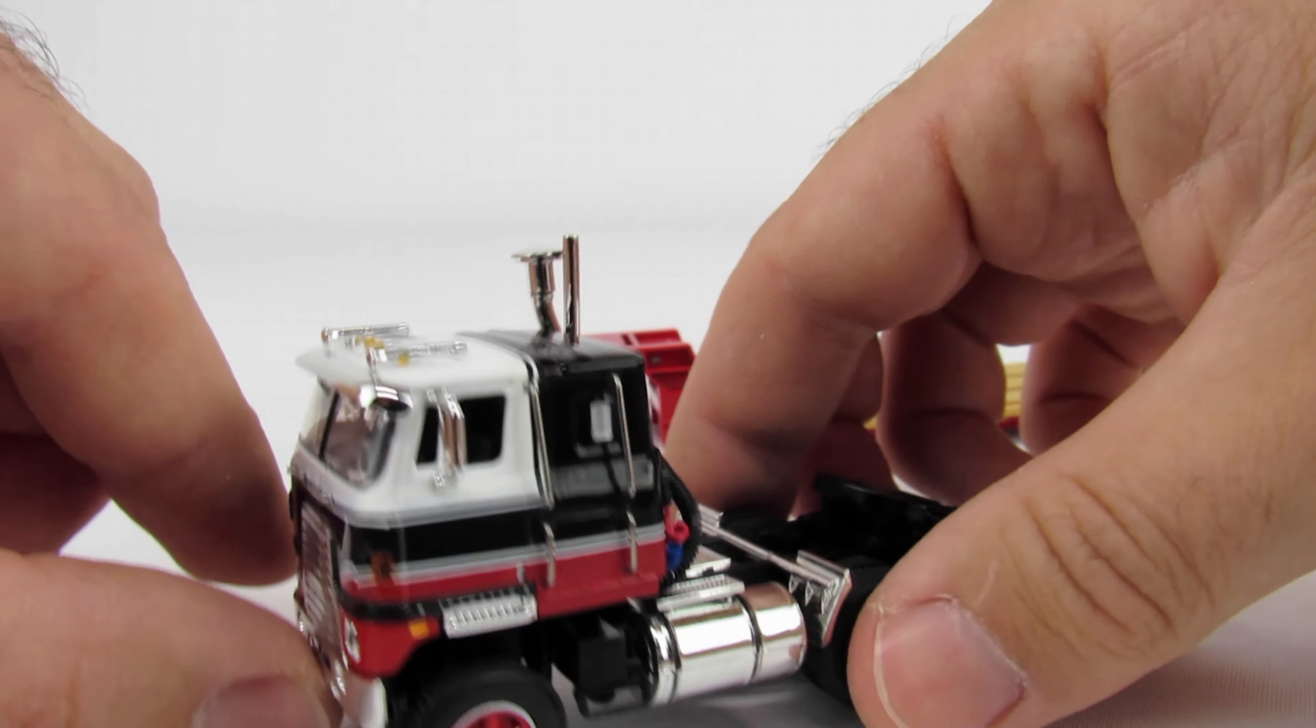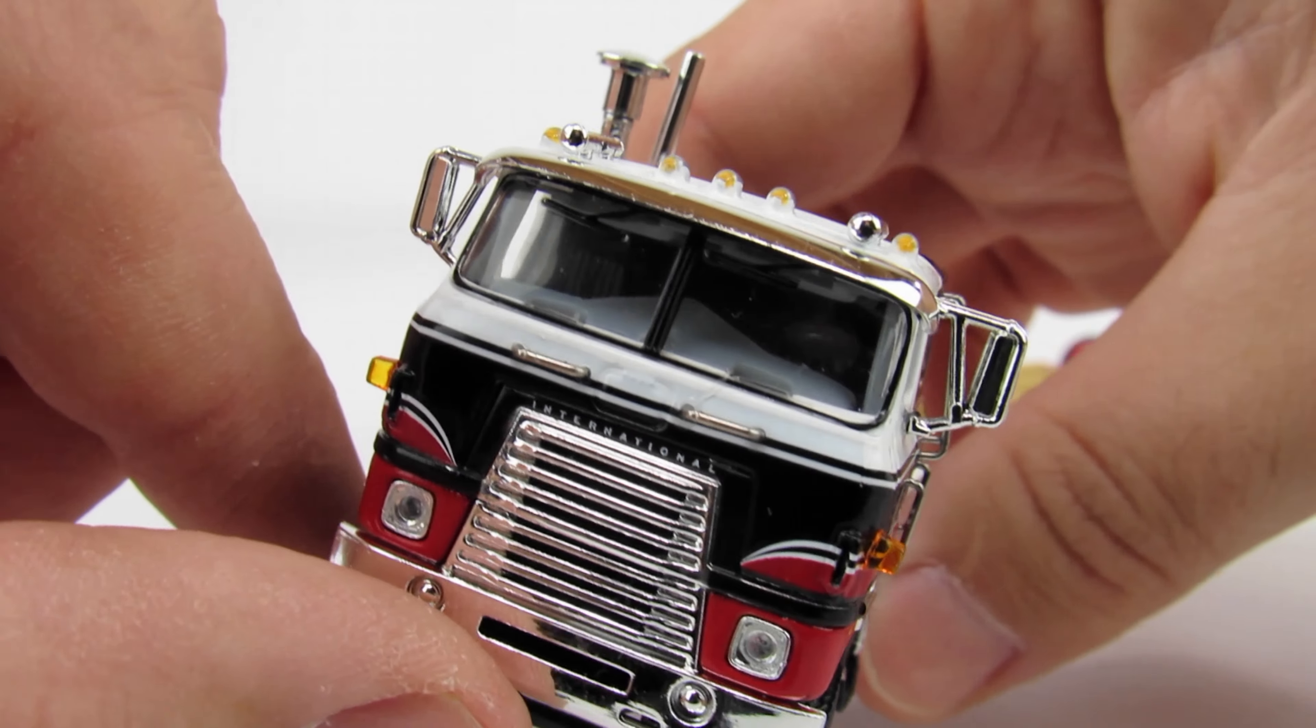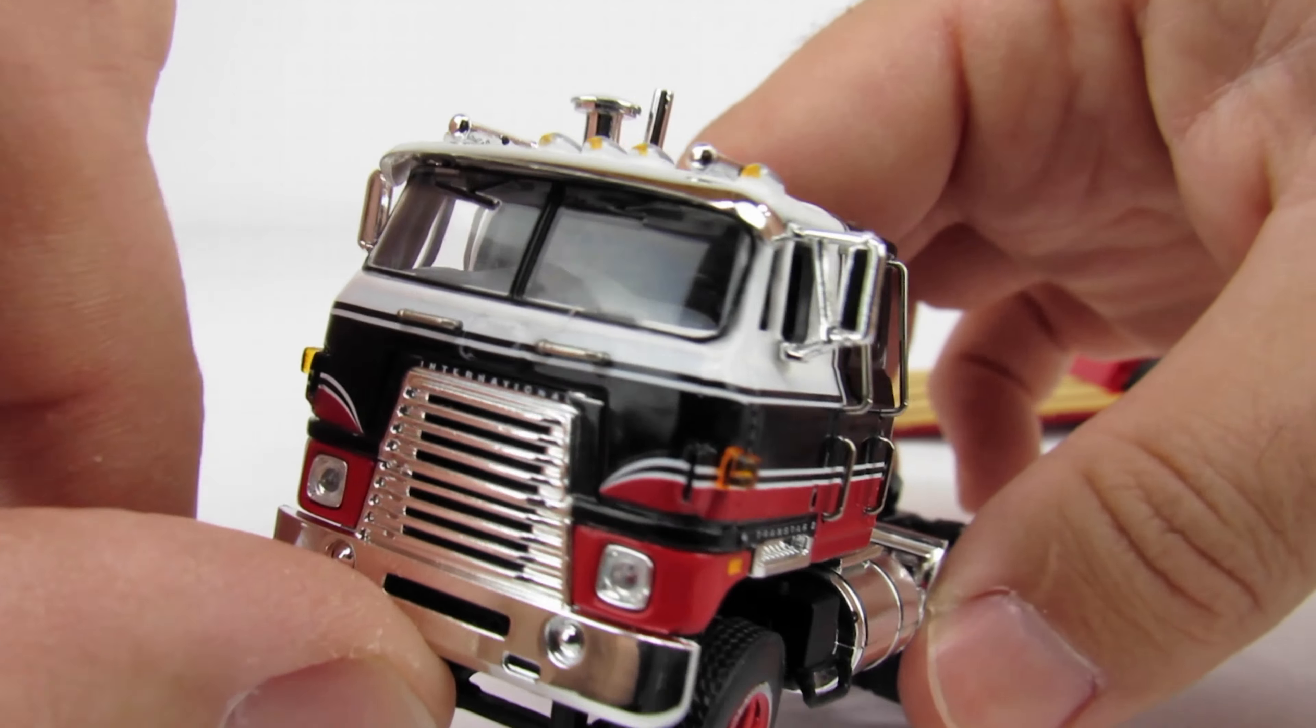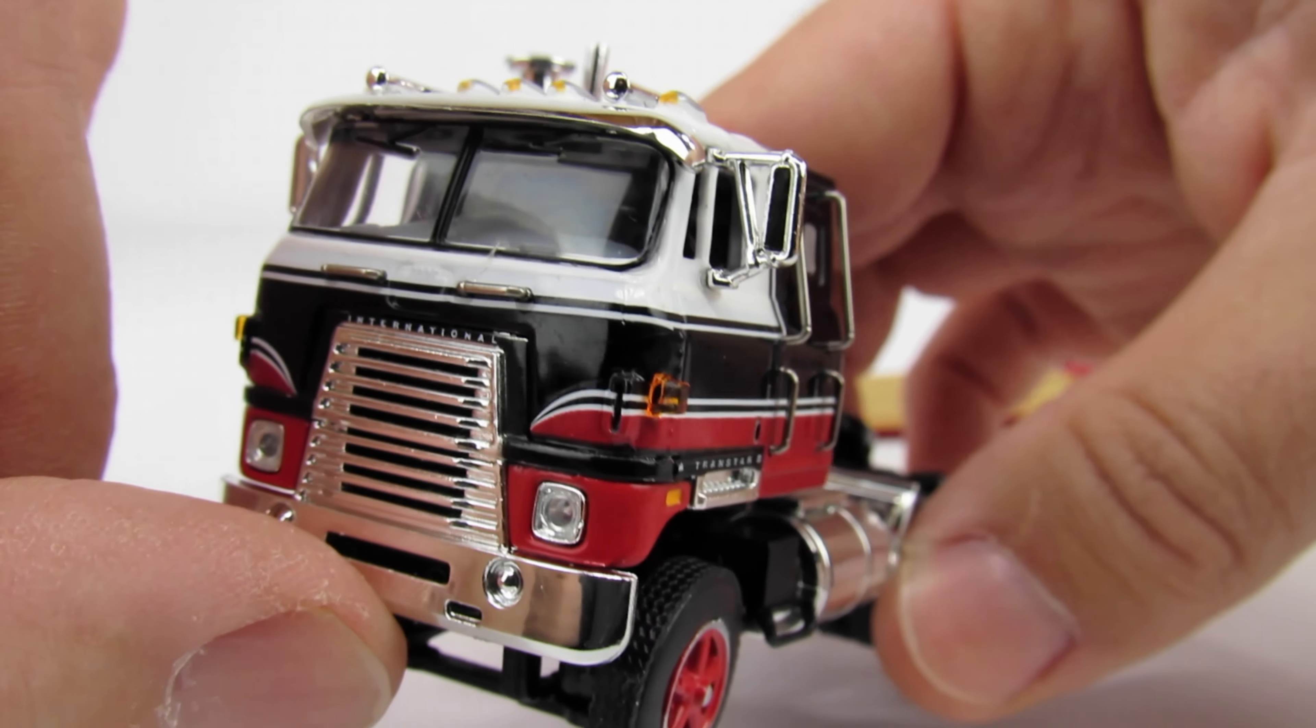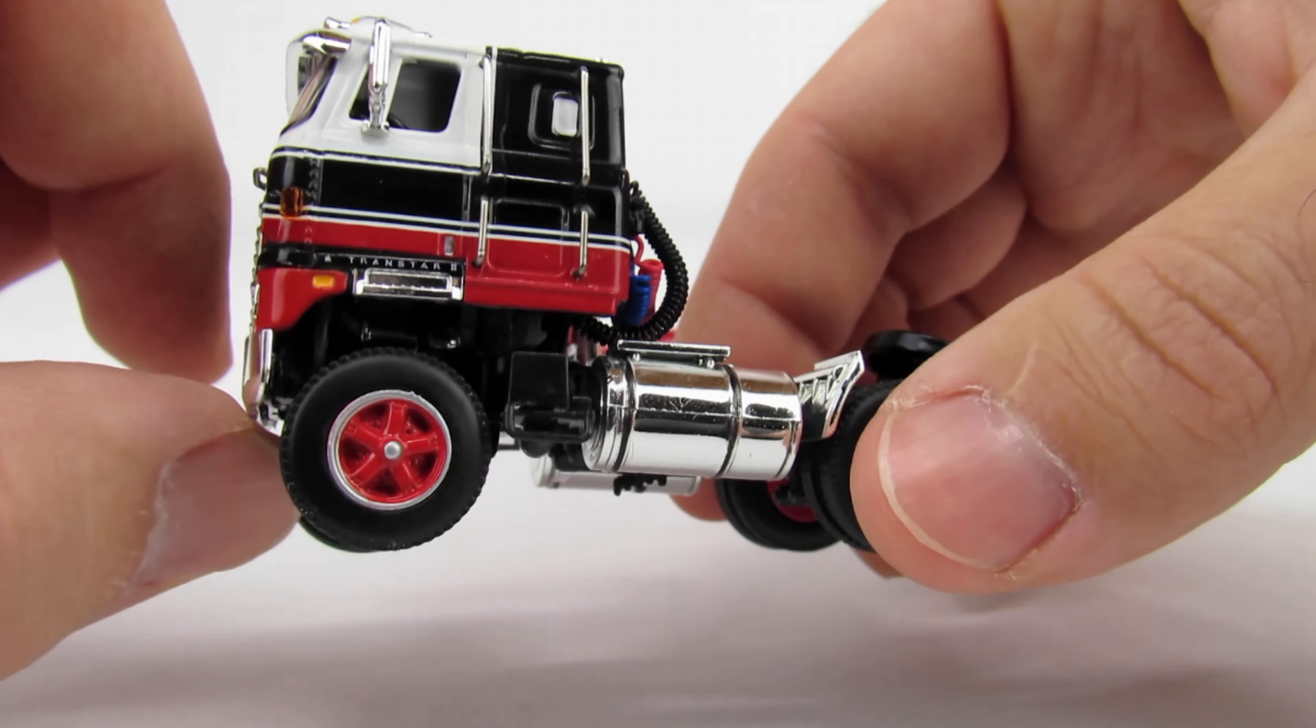You can just barely see inside the cab there and it does look pretty decent, but you really can't see anything. The mirrors, wipers, and turn signals all look really good.